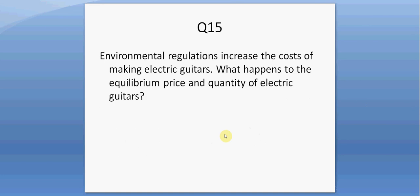Question fifteen. Environmental regulations increase the cost of making electric guitars. What happens to the equilibrium price and quantity of electric guitars? This will cause the supply curve to decrease, shifting to the left, which will raise the equilibrium price and cause the equilibrium quantity to decrease.